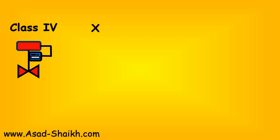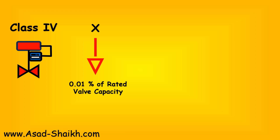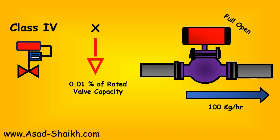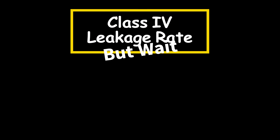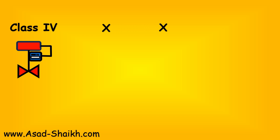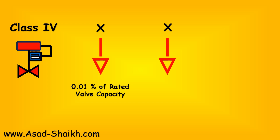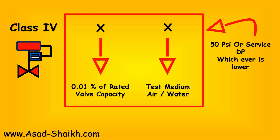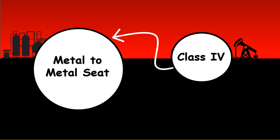In class 4 leakage rate, the leakage is 0.01% of the rated valve capacity. If a valve is completely open and the maximum flow is 100 kg per hour, then when the valve is completely closed the leakage rate must be just 0.01 kg per hour — a very minuscule quantity. The test medium can be liquid or gas such as air or water, and the differential pressure is usually 50 PSIG or the service DP, whichever is lower, at a temperature of around 50 to 150 degrees Fahrenheit. This is the most used class for metal-to-metal seat.